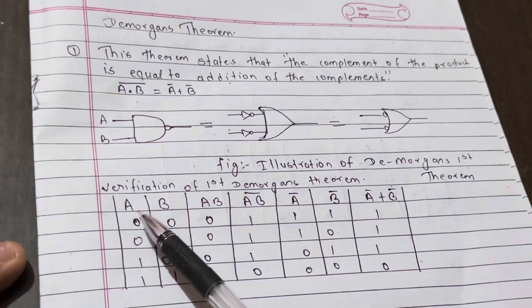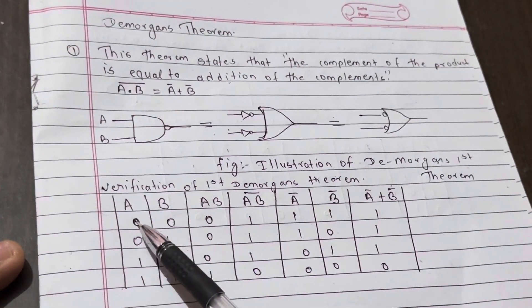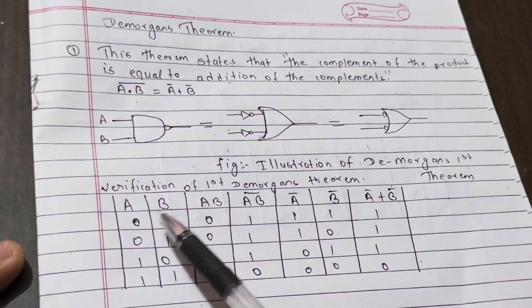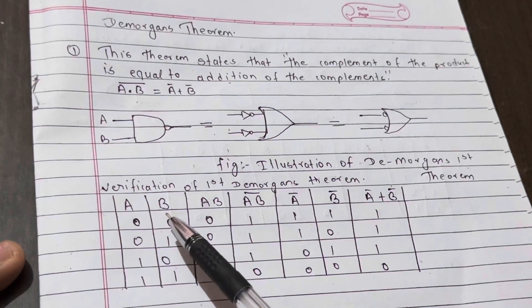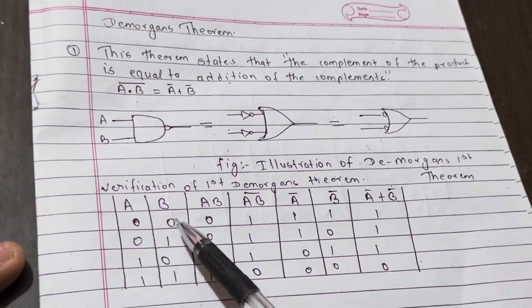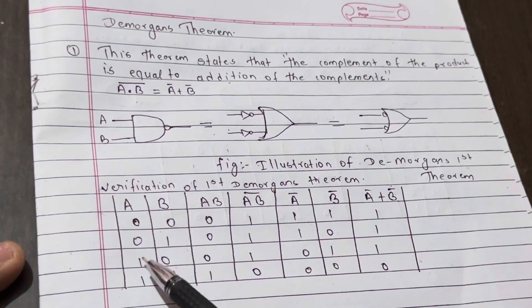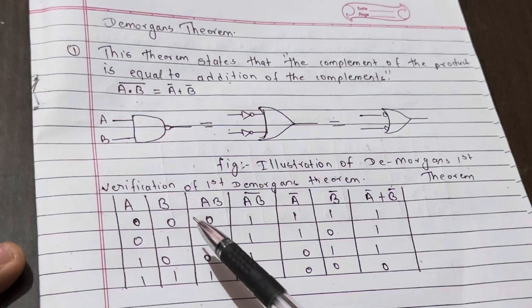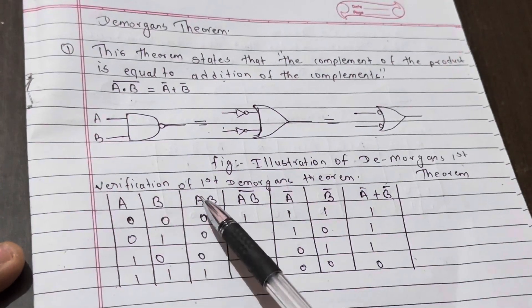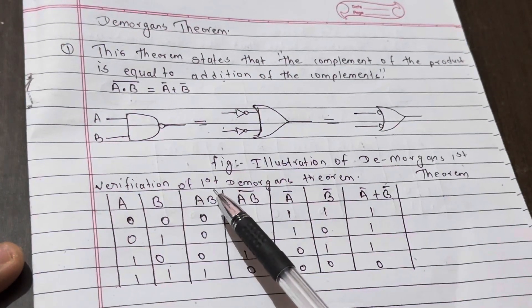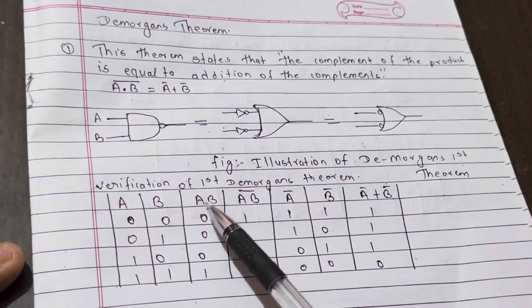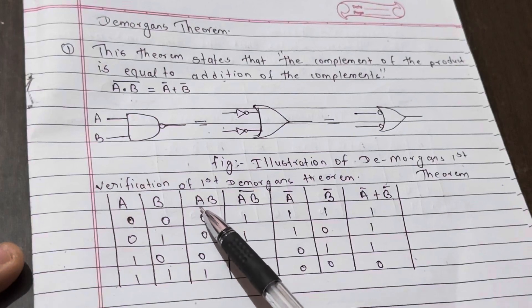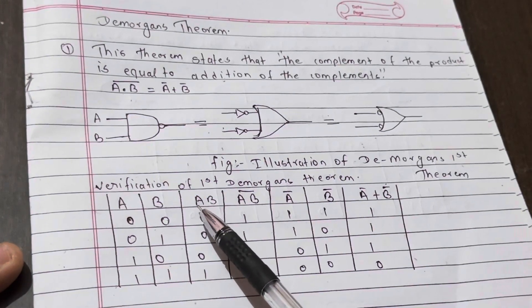In the first part, we will take A and B. For A and B, we will take the 2-bit combination: 0-0, 0-1, 1-0, and 1-1. The value is A·B — this is the multiplication of A and B.